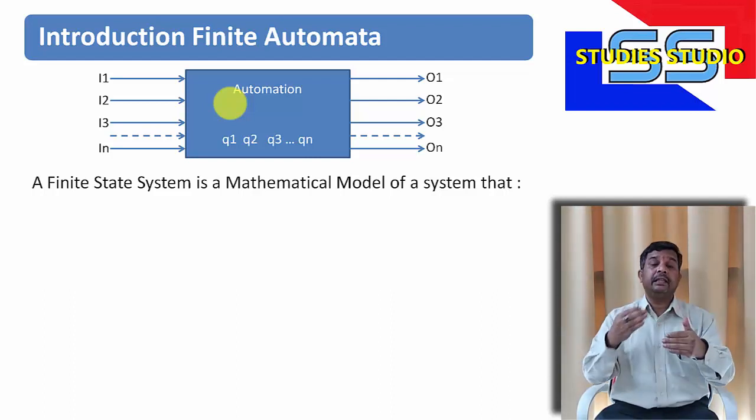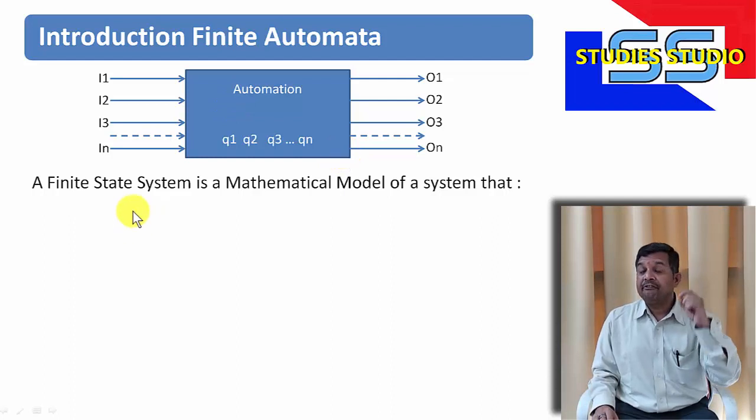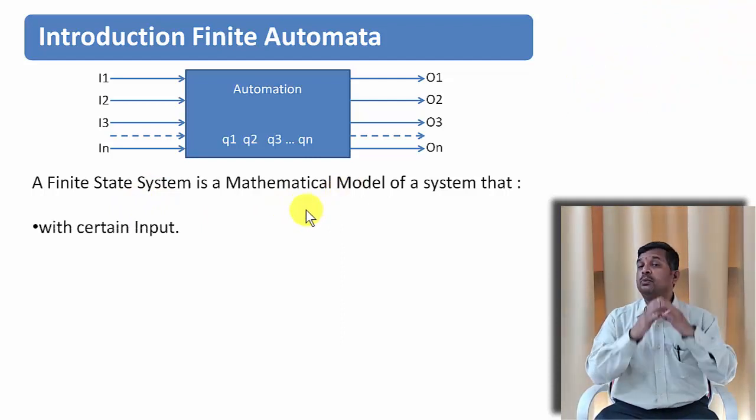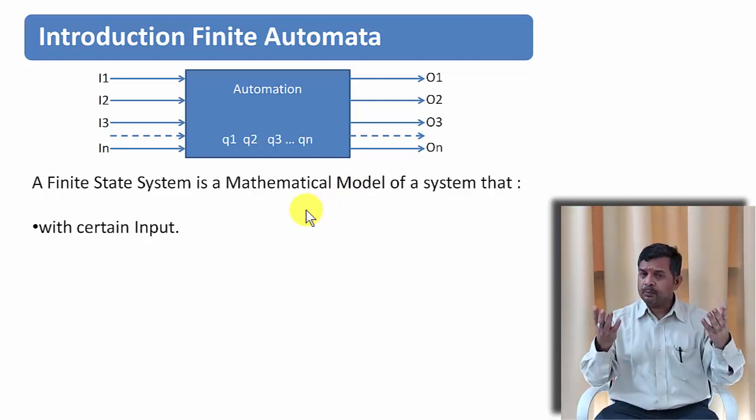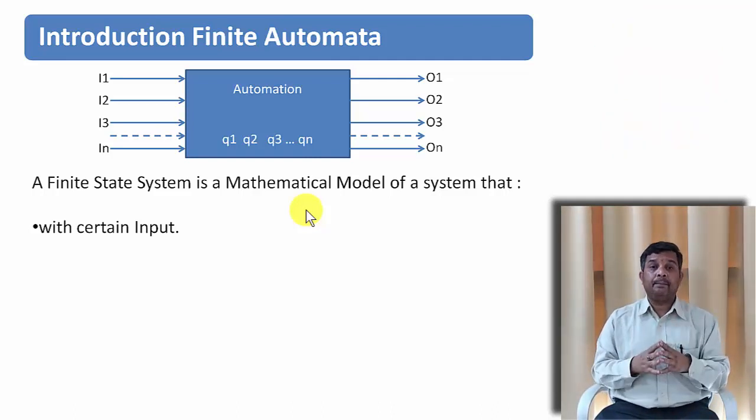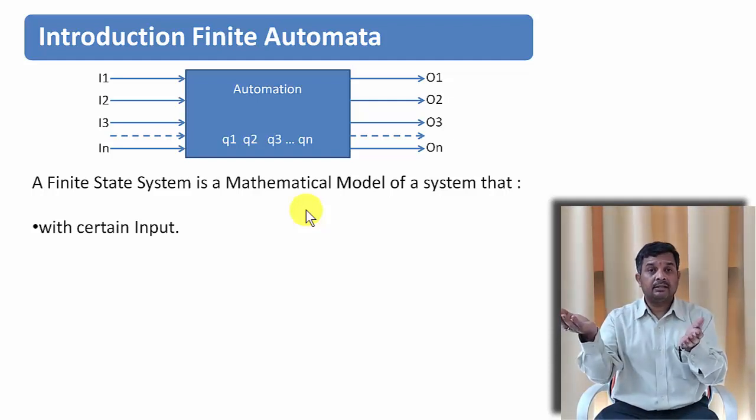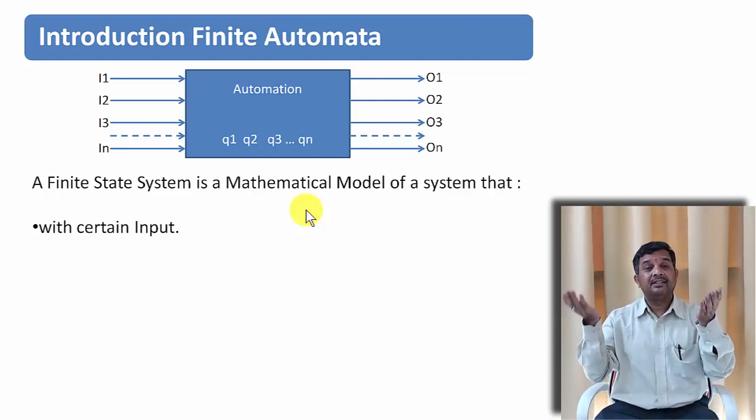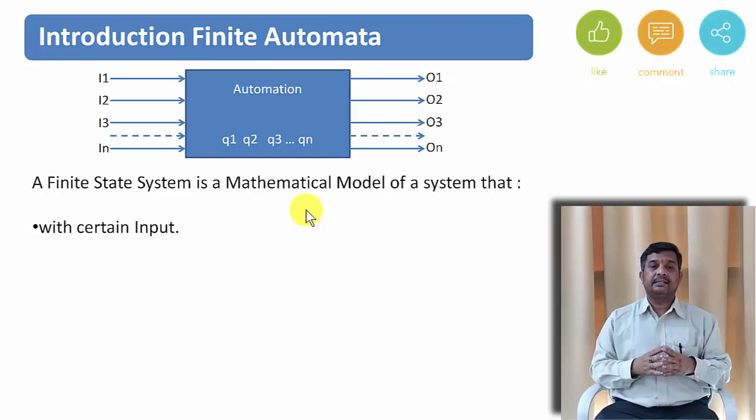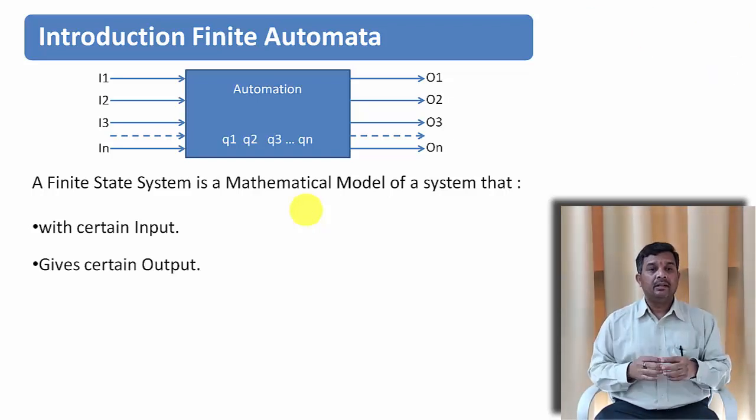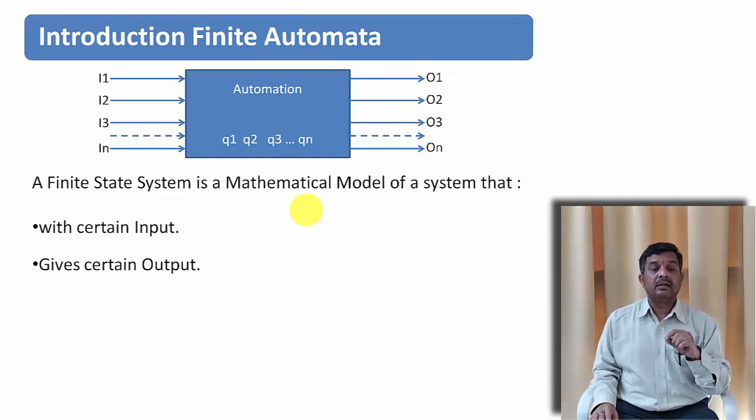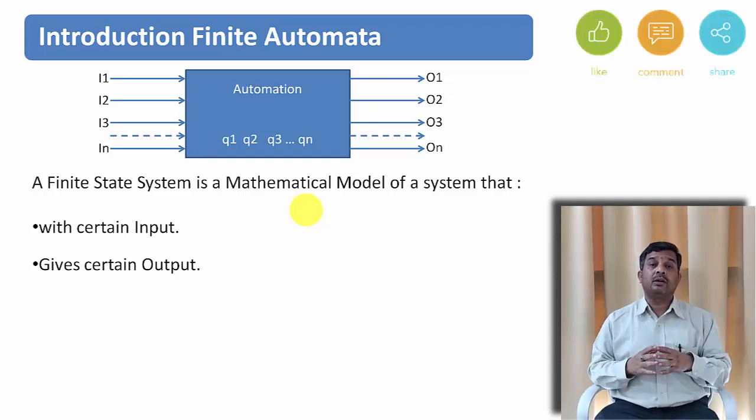So automation doesn't mean that everything needs to be done automatically. A finite system is a mathematical model of a system that has certain inputs. So without input, you cannot do. Sometimes input is also not required and the system changes its states—it is also possible. Like, for example, you kept milk at night; in the morning, the state changes to curd, isn't it? So like that, sometimes you don't give any kind of input as such, but still it makes changes. And sometimes you give input, you must get an output. Unless and until you get an output, what is the use of this automation? So an output is a must. There may be an input to the system or not, but the output is a must.